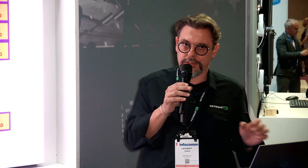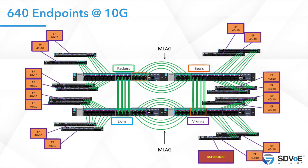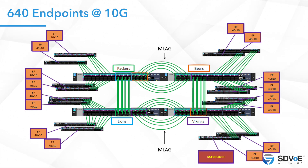A real-world example: one of the largest SDVoE installations in the world — the American Dream mall on the East Coast in New Jersey — with 600 SDVoE endpoints on a single network. At the center is a double multi-chassis link aggregation using Netgear 4500 switches. By achieving a double-tier multi-chassis link aggregation in large architectures, with 10G switches at the edge, the installation delivers a non-blocking 320×320 matrix.